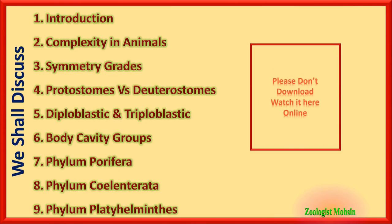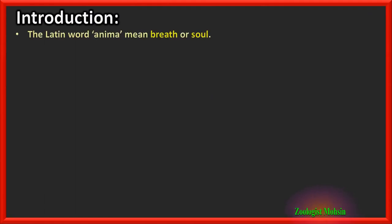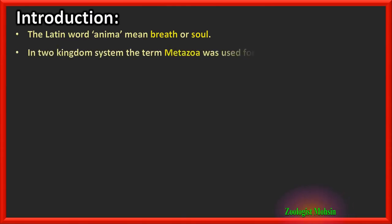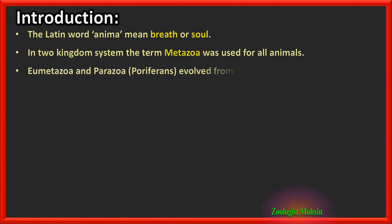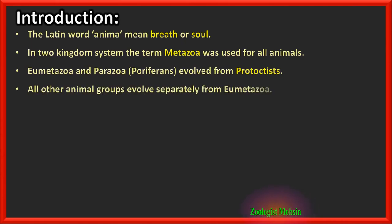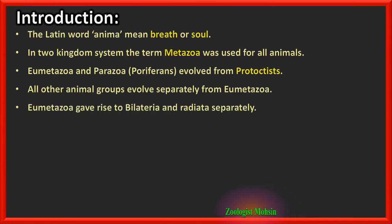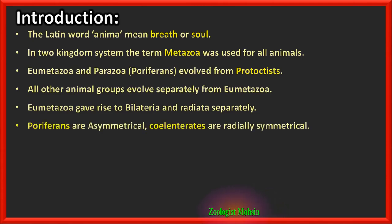The Latin word 'anima' means breath or soul — that's why the word 'animal' is used for those who breathe. In the two-kingdom system, the term Metazoa was used for all animals. Eumetazoa and Parazoa are two different clades and they evolved from protists. All other animal groups evolved separately from Eumetazoa and not from Parazoa. Eumetazoa gave rise to Bilateria grade and Radiata grade separately.